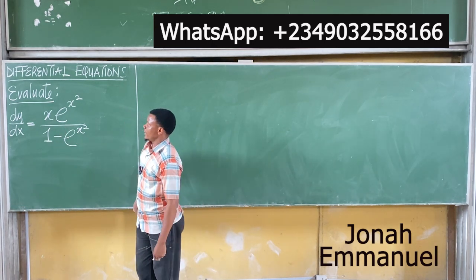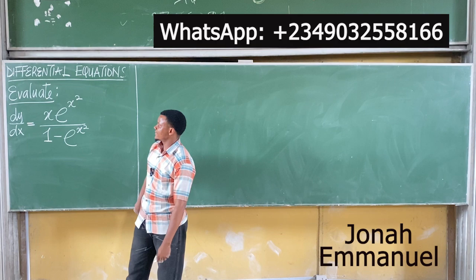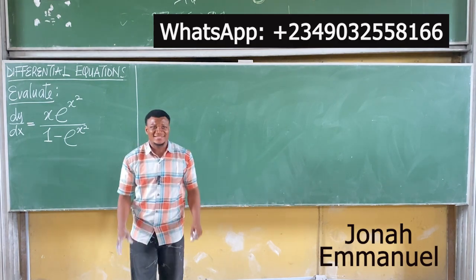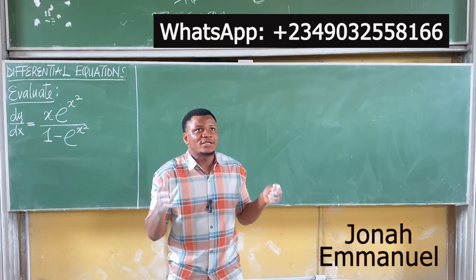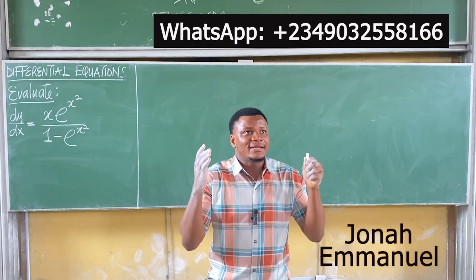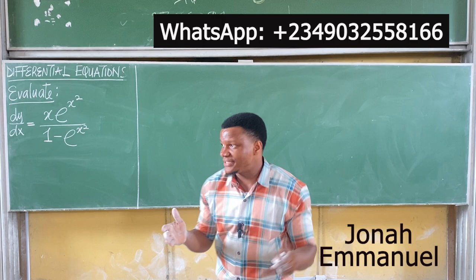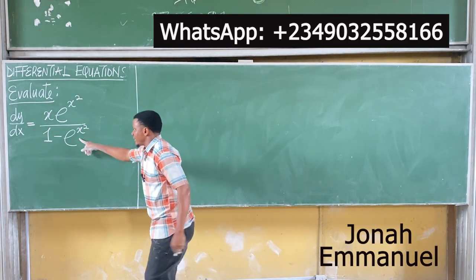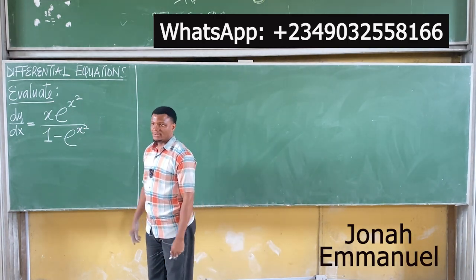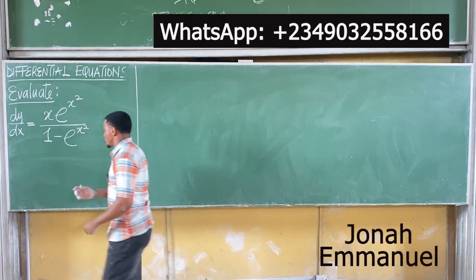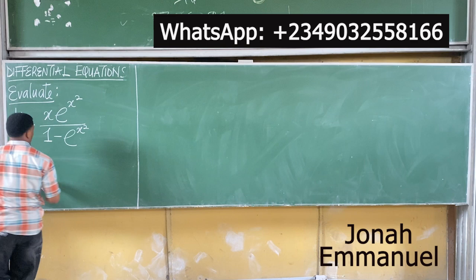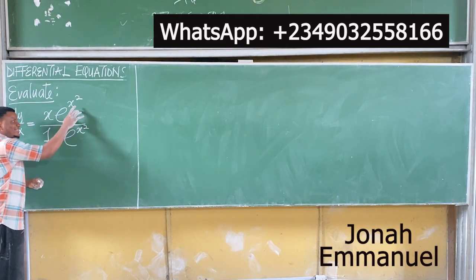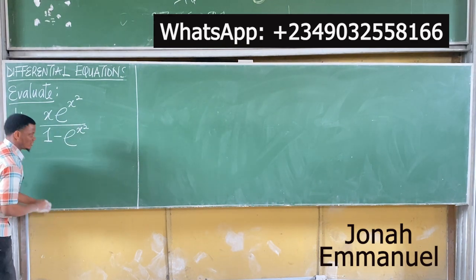Let's look at this next one: u has dy/dx equal to x times exponential x squared, all over 1 minus exponential x squared. If you actually know how this will work — if I differentiate the denominator here, I'll get the numerator. It's very evident. So we use substitution.